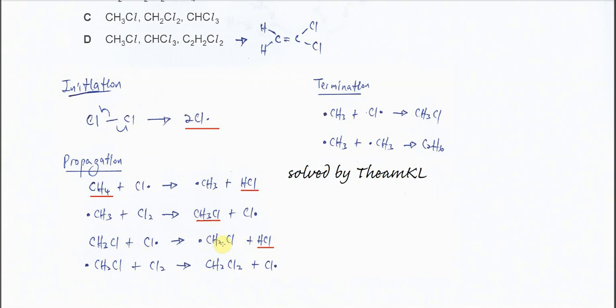This CH2Cl radical will attack another chlorine atom, so it will get one chlorine from it to form CH2Cl2. The chlorine radical now regenerates again. As you can see, this propagation will continue until all the hydrogen has been substituted, until it forms CCl4.